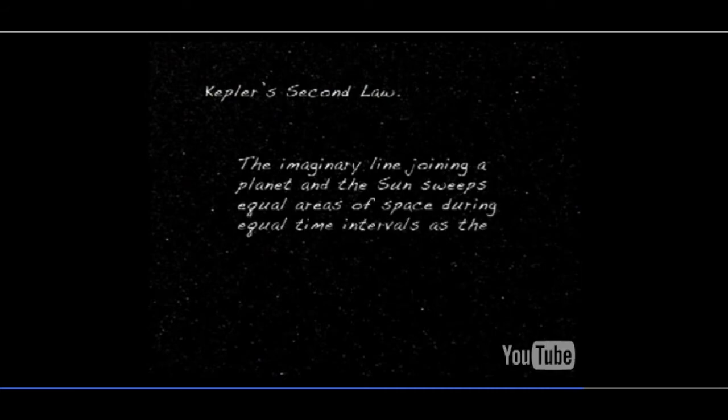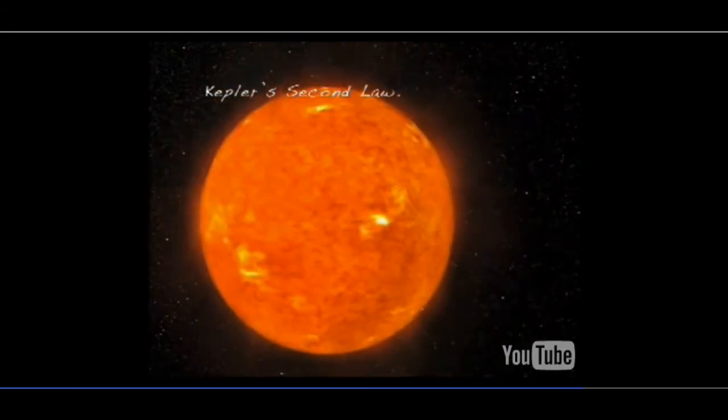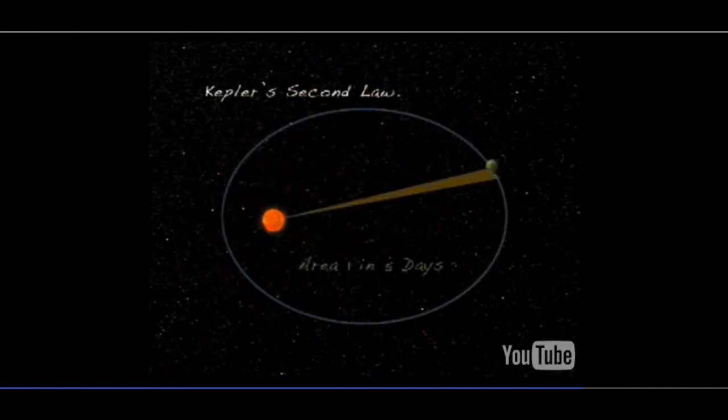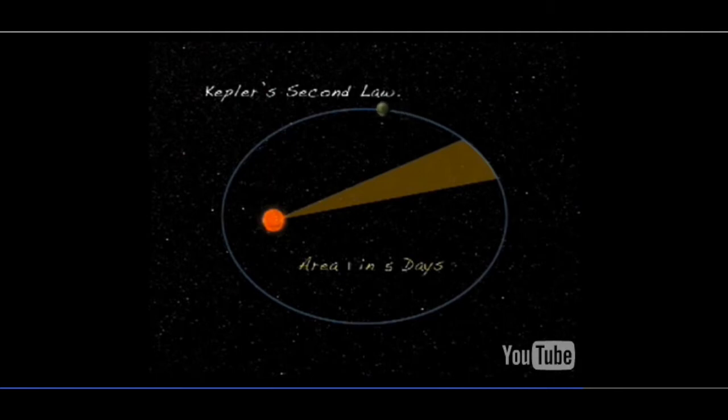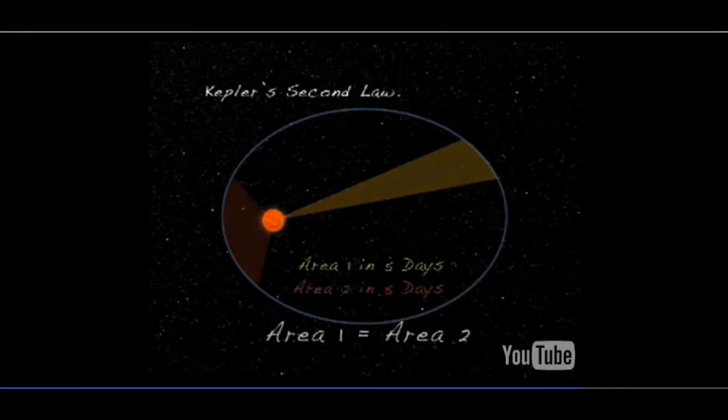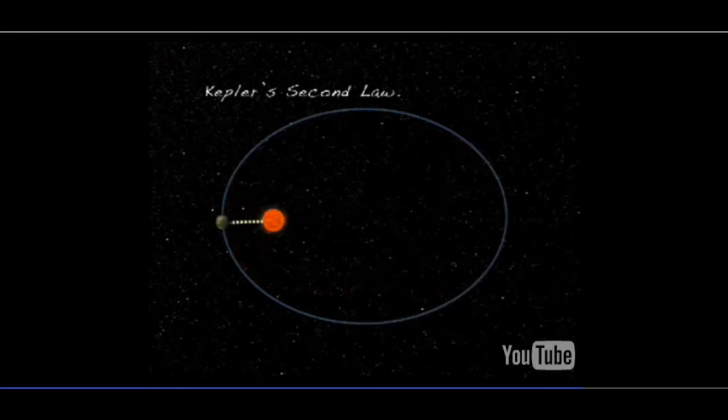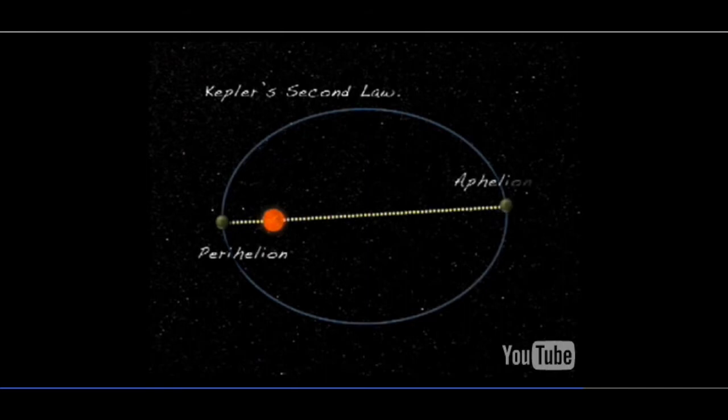Kepler's second law: the imaginary line joining a planet and the sun sweeps equal areas of space during equal time intervals as the planet orbits. Basically, planets do not move with constant speed along their orbits. Rather, their speed varies so that the line joining the centers of the sun and a planet sweeps out equal parts of an area in equal times. The point of nearest approach of the planet to the sun is termed perihelion. The point of greatest separation is aphelion. Hence, by Kepler's second law, a planet is moving fastest when it is at perihelion and slowest at aphelion.